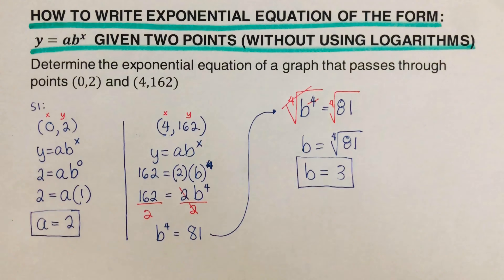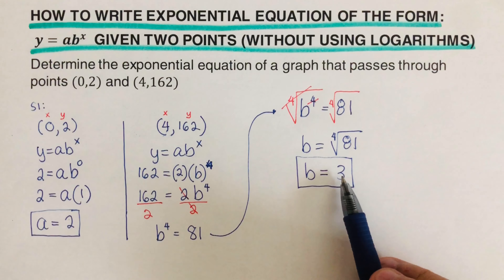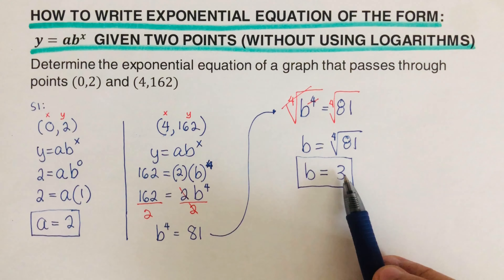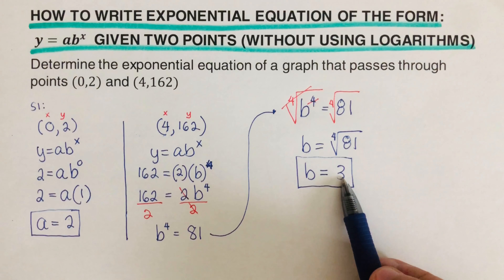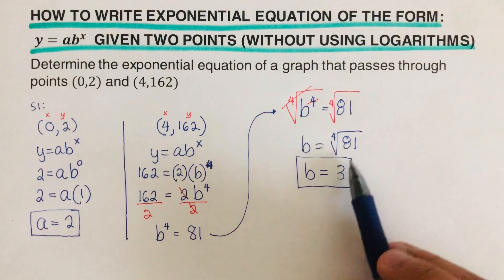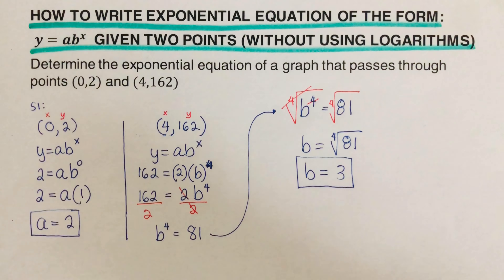Another way to think about it: what number multiplied by itself four times equals 81? Three times three is 9, times three is 27, times three is 81. So the fourth root of 81 is 3, giving us b equals 3.